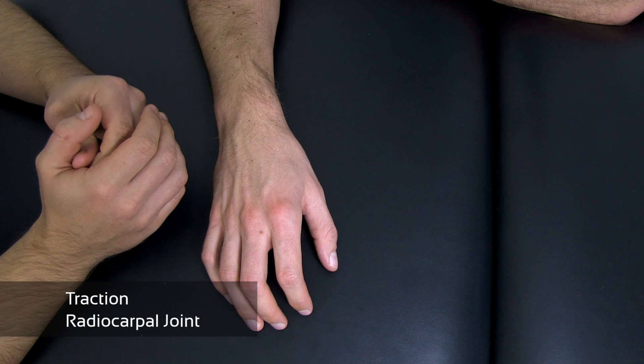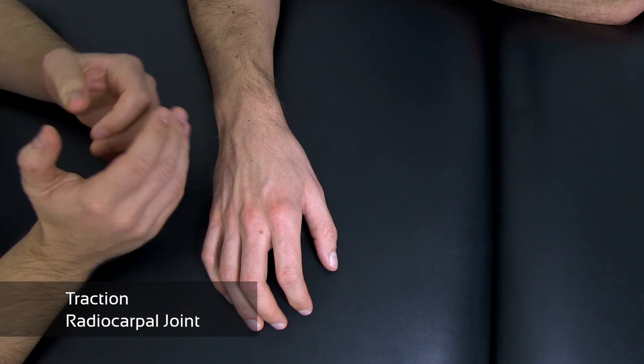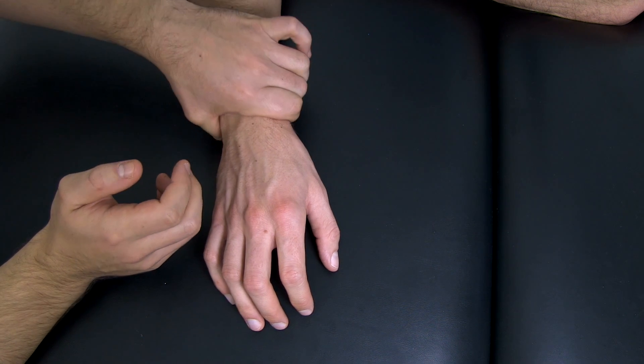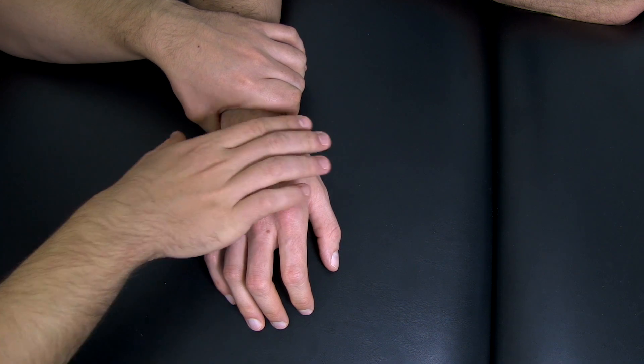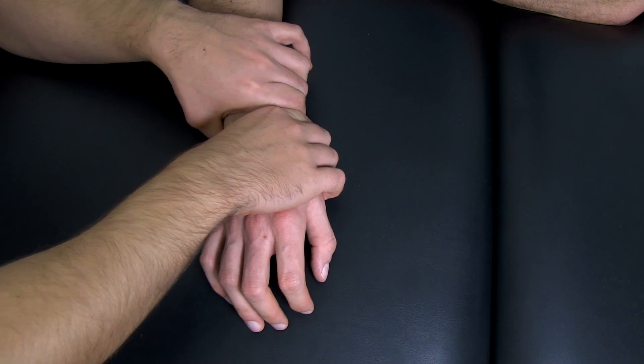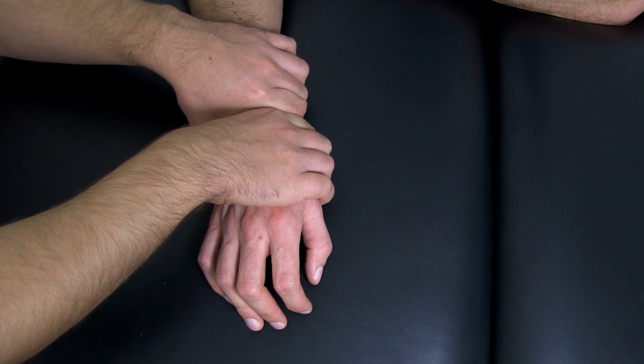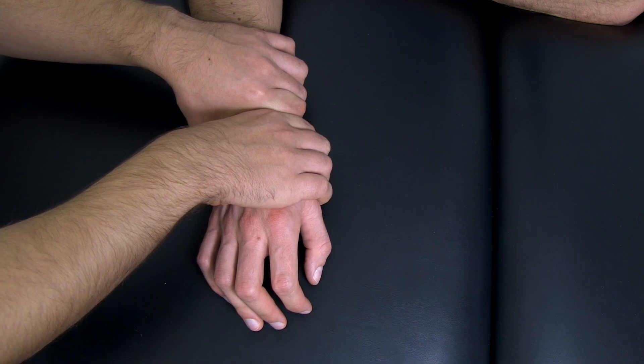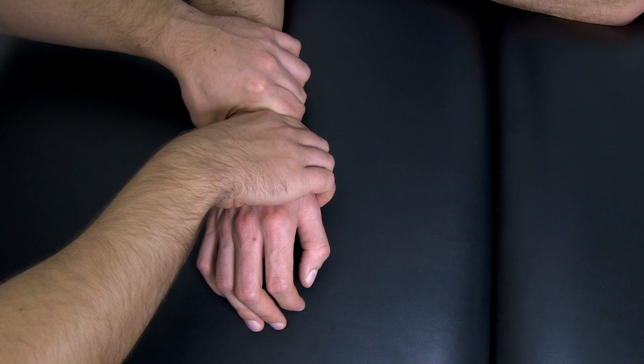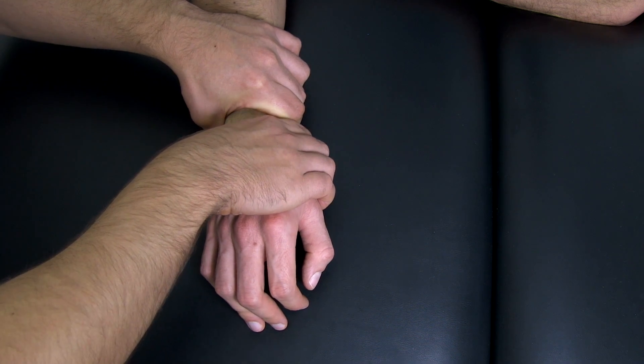Let's begin with traction at the radiocarpal joint. With one hand fixate the distal forearm and with the other grasp the proximal row of the carpal bones. If your fixation is right, there should be no gap between your two hands. Then apply a longitudinal traction with the distal hand.